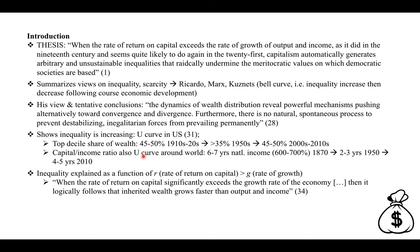The capital-income ratio also follows a U-curve and is directly related to inequality. Around 1870 it was six to seven years of national income — 600 to 700 percent — then around 1950 it decreased to 200 to 300 percent, and as of 2010 it's back up to 400 to 500 percent. Then he gives one of his important formulas: inequality is explained as a function of R — the rate of return on capital — being greater than G, the rate of growth.